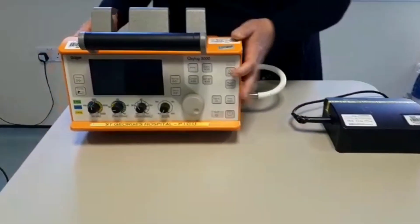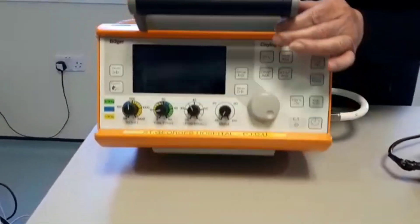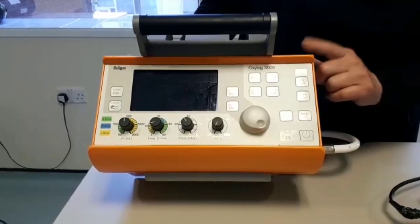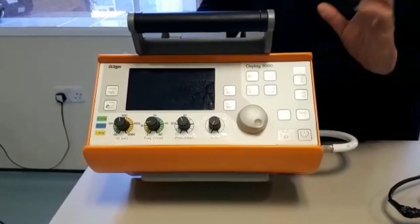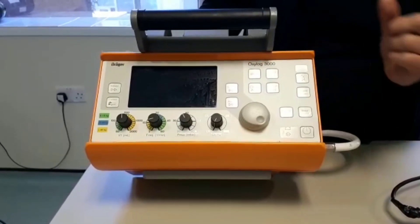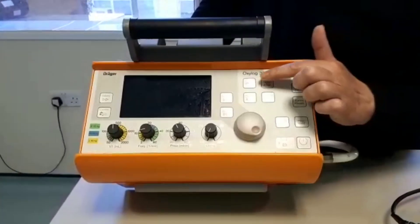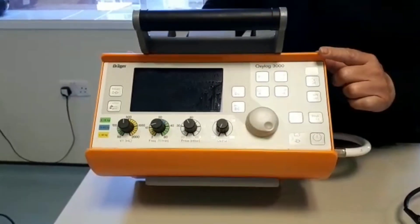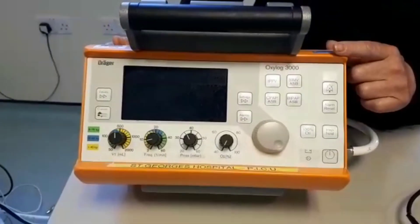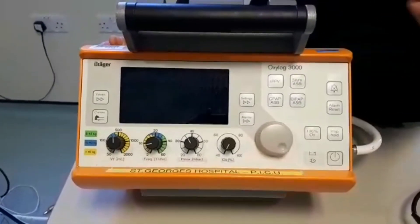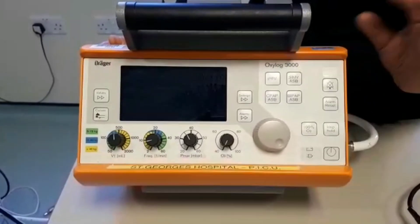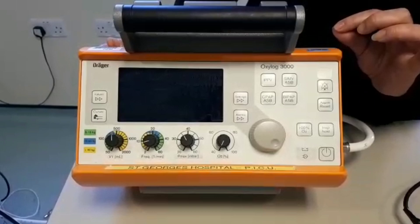I'm just going to quickly show you how to set up the Oxalog 3000 ventilator. We also have Oxalog 3000 Pluses in the trust. There's two differences between them. The Oxalog 3000 Plus has CMV rather than IPPV mode. And also, when you first turn the device on, it will display that you want to use an adult or pediatric circuit. But we'll show you that when I turn the device on. They're the only two differences you need to know about.